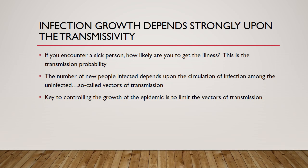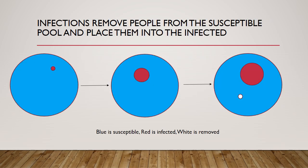The infection growth depends strongly upon the transmissivity. The transmissivity can simply be thought of as: if you encounter a sick person, how likely are you to get the illness? This is called the transmission probability, which I have called the factor beta in these equations. The number of new people infected depends upon the circulation of infection among the uninfected — the vectors of transmission that the uninfected population encounter — and then based upon that probability when you encounter an infected person, you may or may not actually pick up the infection.